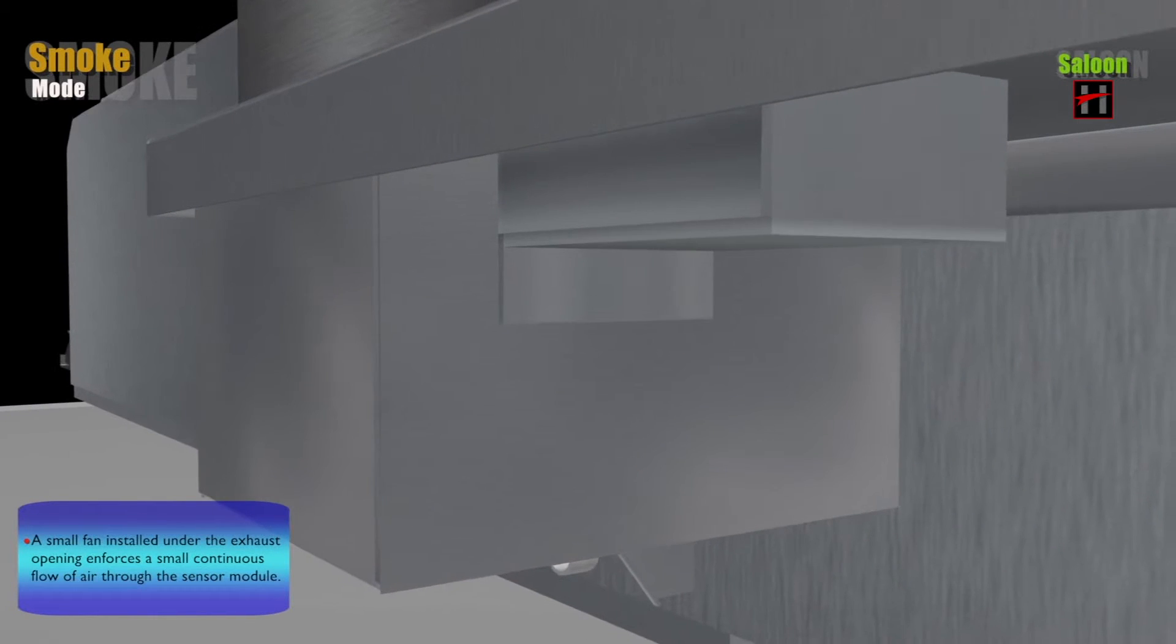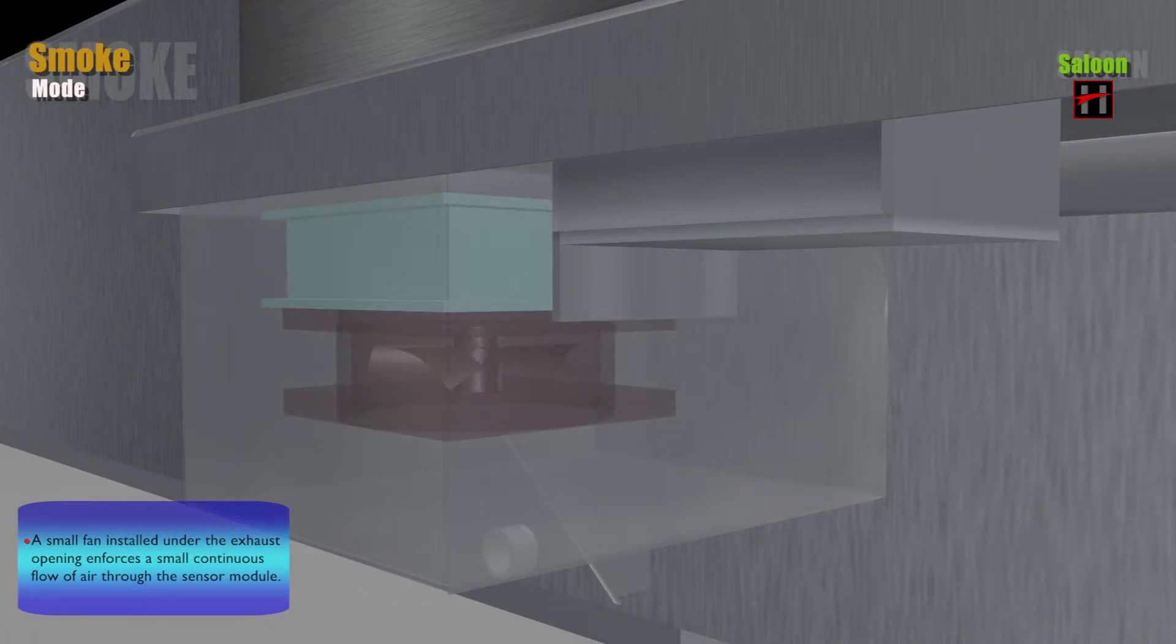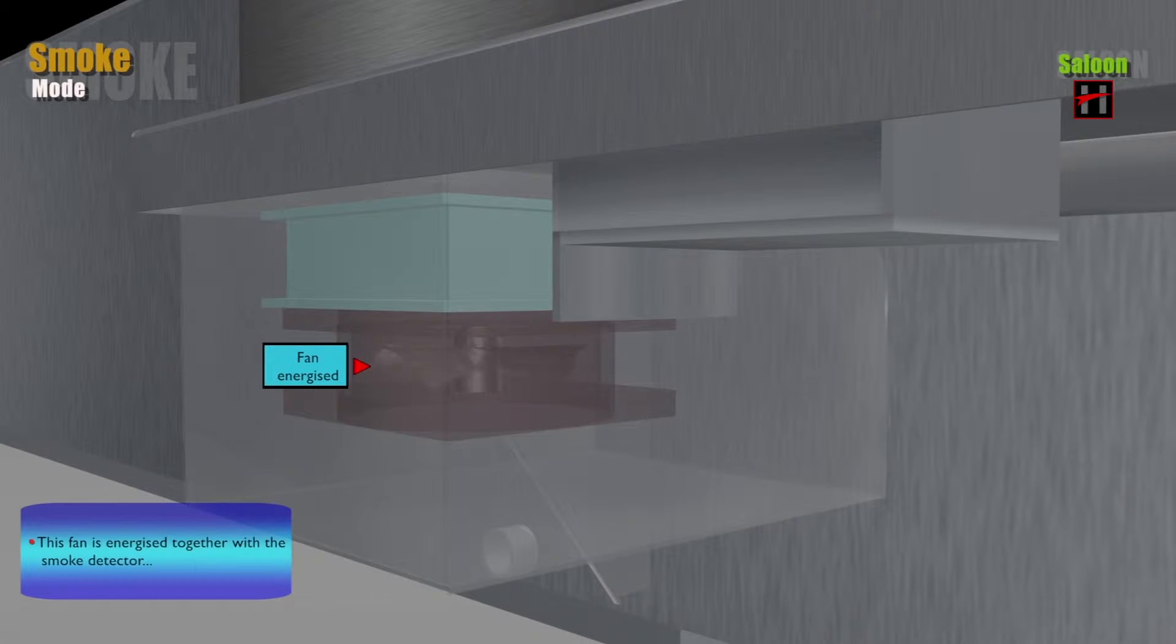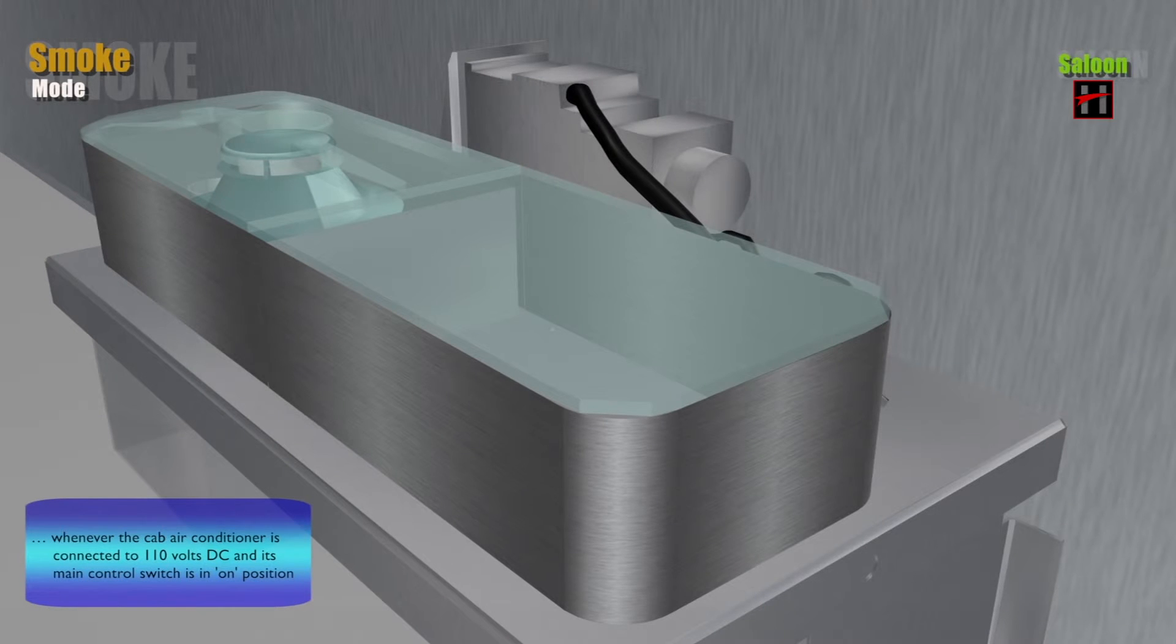A small fan installed under the exhaust opening enforces a small continuous flow of air through the sensor module. This fan is energized together with the smoke detector whenever the cab air conditioner is connected to 110 volt DC and its main control switch is in ON position.